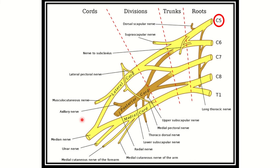Let's see this picture. This picture is enough to describe the brachial plexus. Here we can see the brachial plexus has five parts: root, trunks, division, cord, and branches.